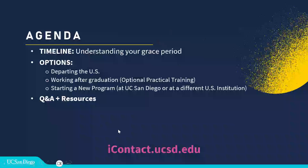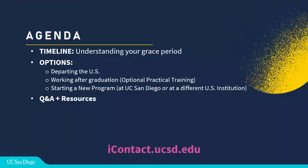Today we will talk about your grace period. After a student completes their program, they have a specific period of time to take action — to either understand next steps, stay in the U.S., or maybe depart. There are various options; however, we will only be highlighting the following three: departing the U.S., working in the U.S. through OPT or optional practical training, or starting a graduate program at a different school or maybe here at UC San Diego.